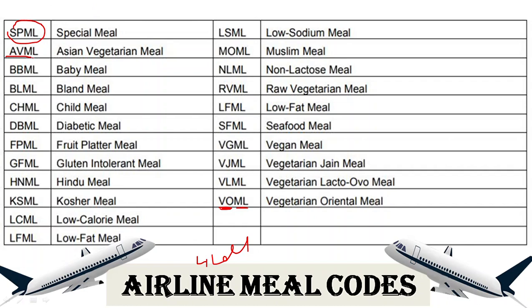AVML is the Asian Vegetarian Meal — you will be given vegetarian Asian food like vegetables, fruits, and milk products, but no eggs, fish, mutton, meat, or chicken. BBML is the Baby Meal for babies. BLML is the Bland Meal, for people experiencing vomiting, nausea, diarrhea, or those who have undergone stomach or intestinal surgery. Bland meals include soft foods that are not very spicy and are low in fiber for better digestion. It also covers conditions like ulcers and heartburn.